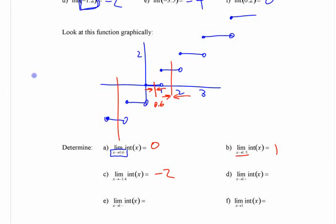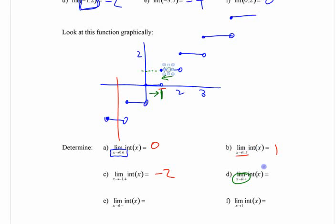But if you pick one of the values right on the boundary — like if you pick 1 and ask what's the limit as you approach 1 — from the right, as you're moving along there, the value looks like it should be 1. So the limit as you approach from the right is 1. But if you approach from the left, it looks like it should be 0. Since the right and the left are different, this limit does not exist.